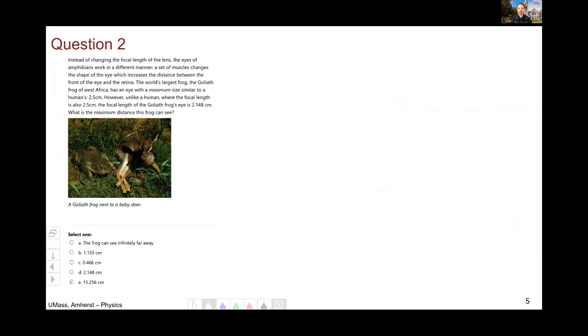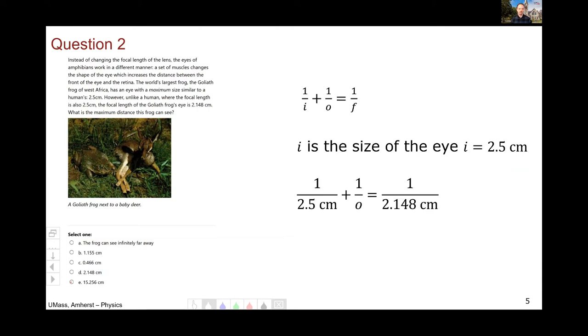Question two was our Goliath frog. For this, this is an application of one over I, one over O equals one over F. The image distance must be the same as the eye size in order for the object to be in focus. The image must be on the retina. So you plug that in and you get the 15.256 centimeters.